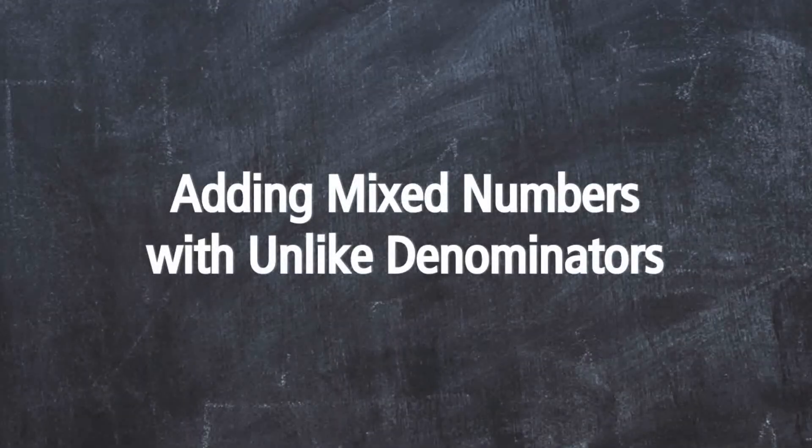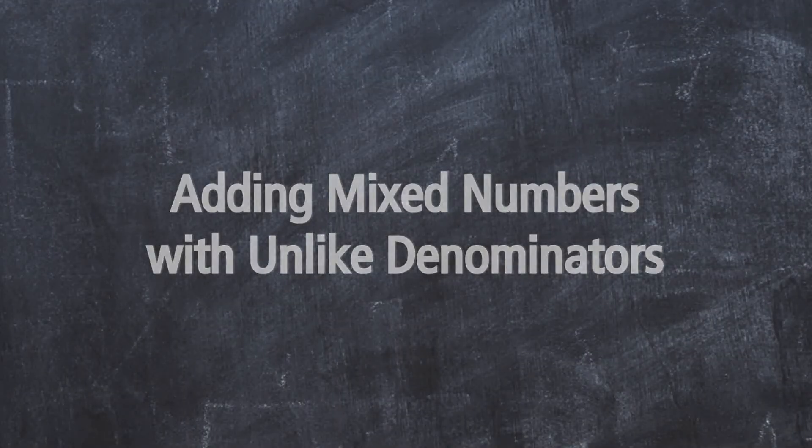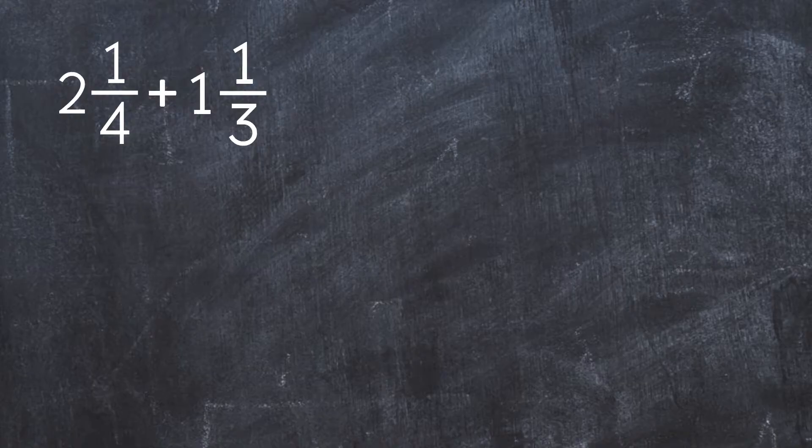Adding mixed numbers with unlike denominators. Let's take a look at an example: 2 and 1 fourth plus 1 and 1 third.